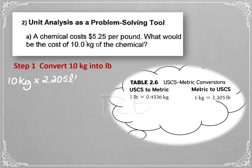10 kilograms multiplied by 2.205 pounds divided by 1 kilogram. Kilograms cancel. The answer is 22.05 pounds.